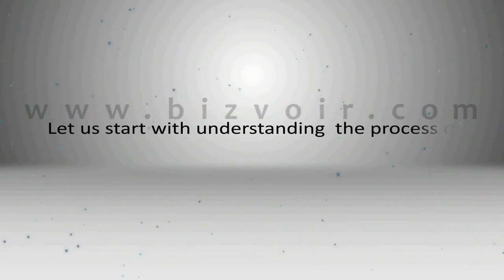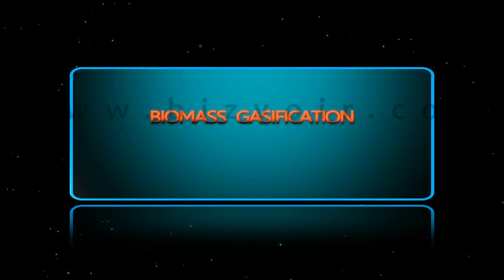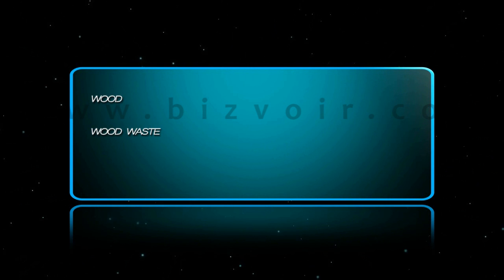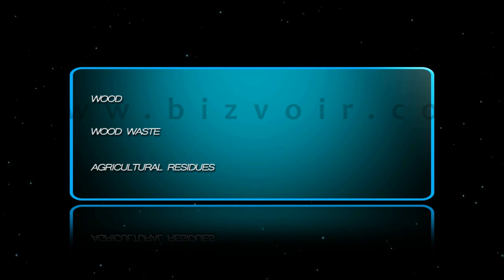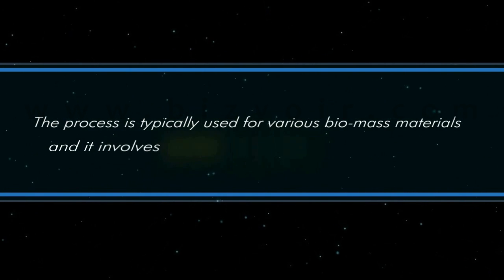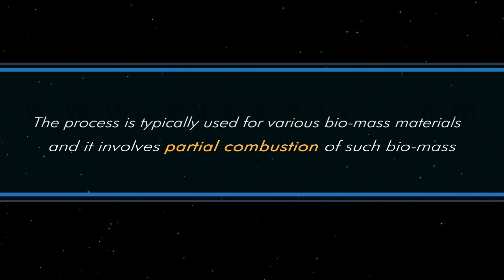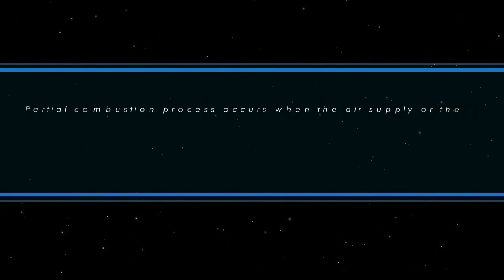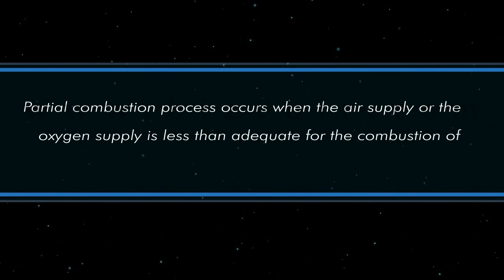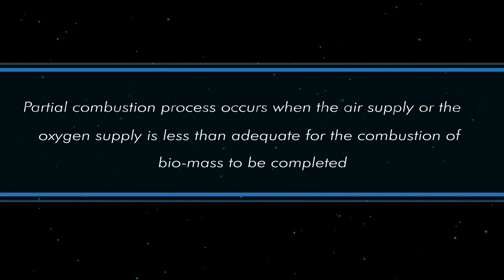Let us start with understanding the process of biomass gasification. Biomass gasification is basically the conversion of solid fuels like wood, wood waste, and agricultural residues into a combustible gas mixture called producer gas. The process involves partial combustion of such biomass, which occurs when the air supply or oxygen supply is less than adequate for combustion to be completed.